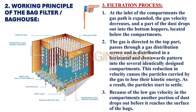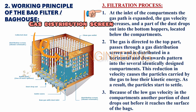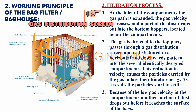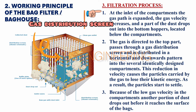Step 3 — Filtration Process: At the inlet of the compartments, the gas path is expanded, the gas velocity decreases, and a part of the dust drops out into the bottom hoppers located below the compartments.